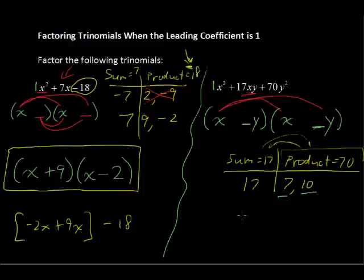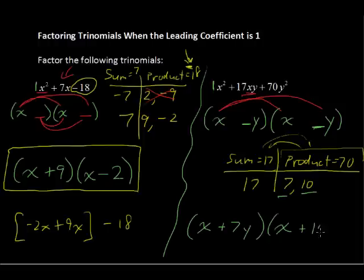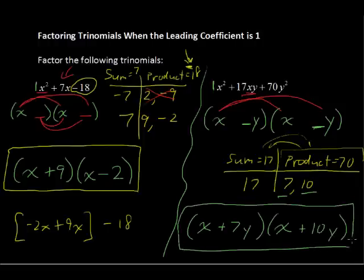So they're both positive. So we have x plus 7y multiplied by the quantity x plus 10y. And again, if you were to multiply those out, you would find that you would get back to this original trinomial.